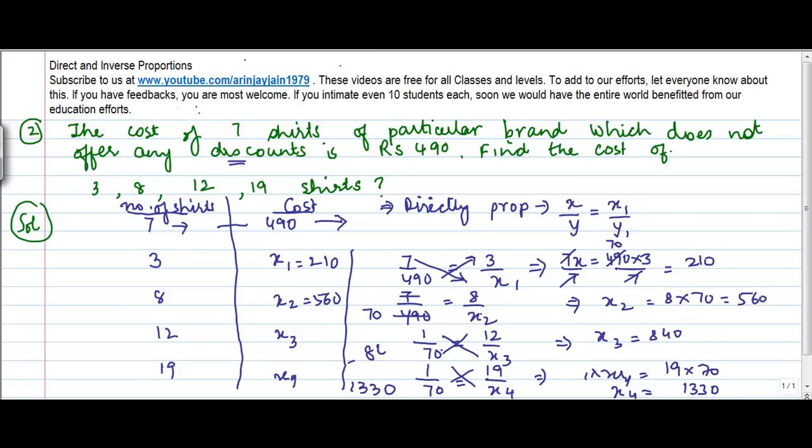So x4 is equal to 1330 and this is equal to 840. So by putting in the proportions we have been able to calculate the missing values.